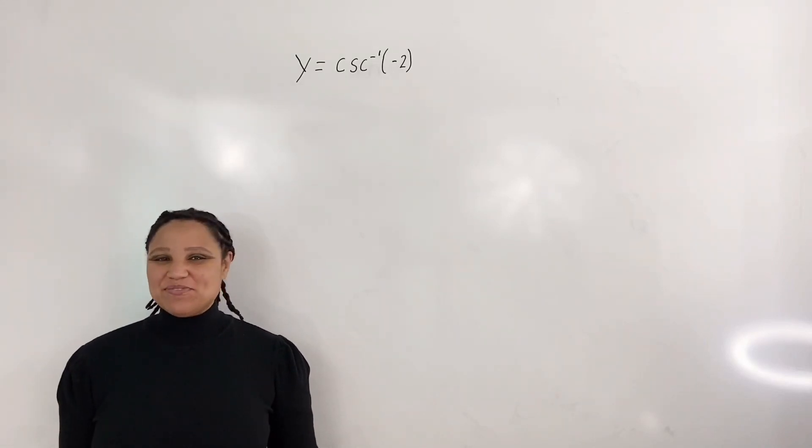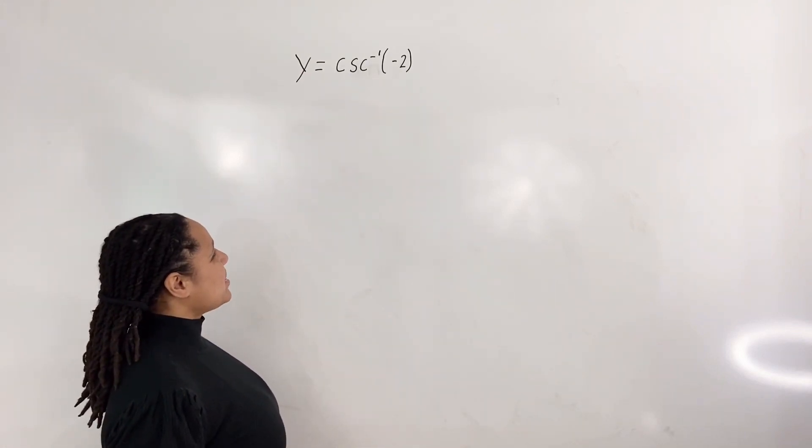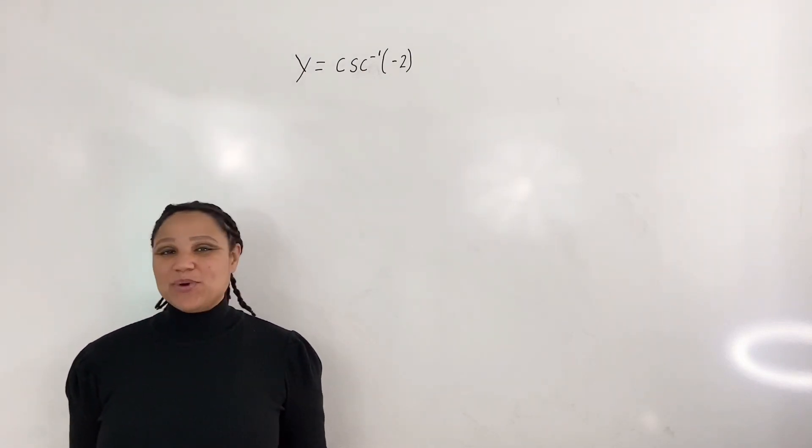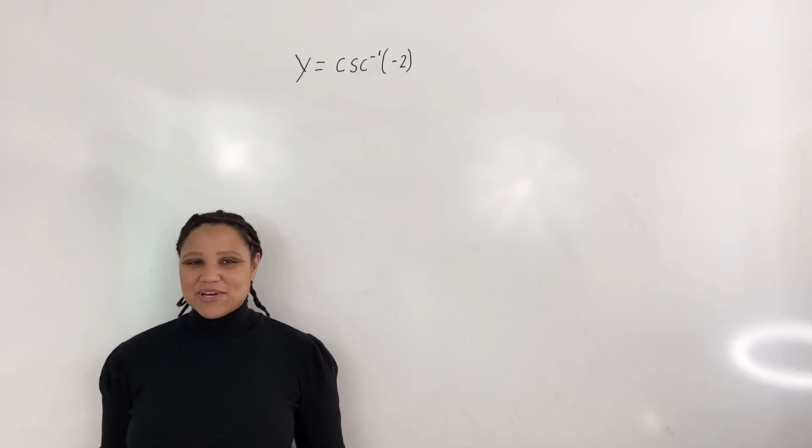In this video, we are going to find the exact value of inverse cosecant. In our example, we have y equals inverse cosecant of negative 2, and we want to find the exact value of inverse cosecant.